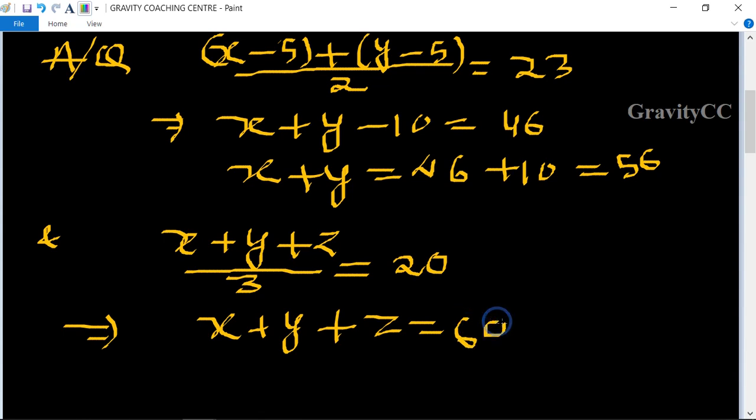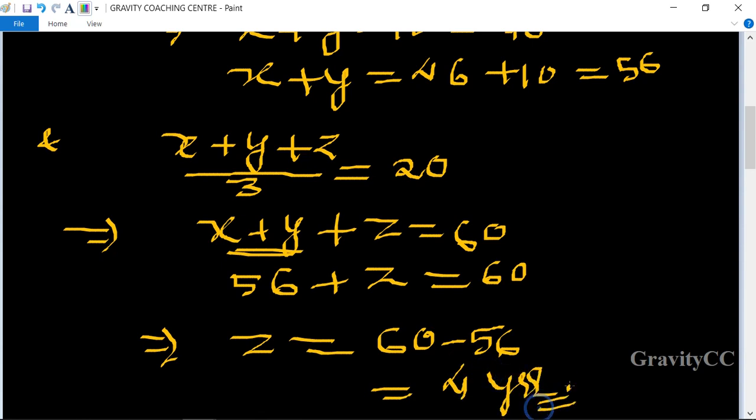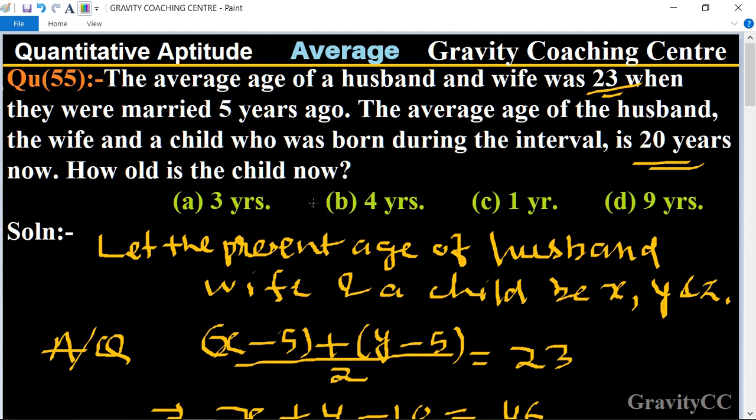So x + y + z = 60. And the value of x + y is 56, so 56 + z = 60. Therefore the child is equal to 60 - 56, which equals 4 years. This is the required answer, so option B is the correct answer.